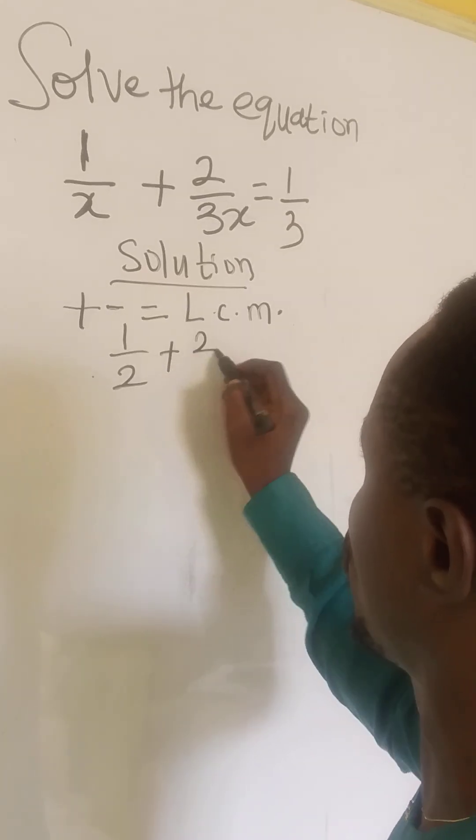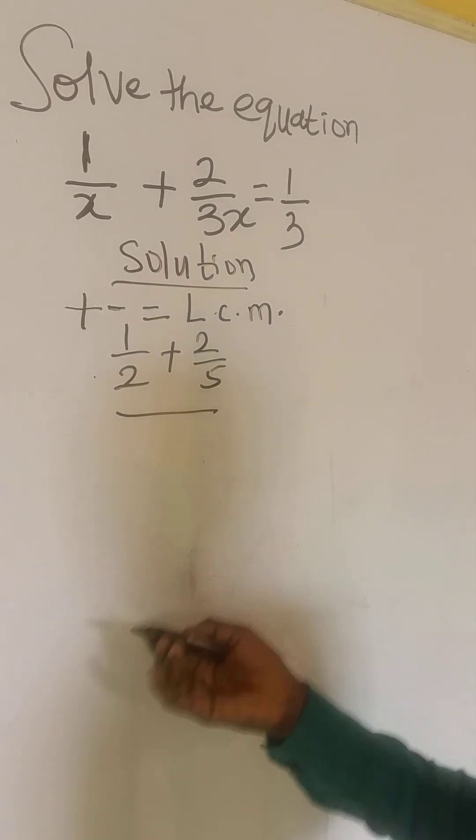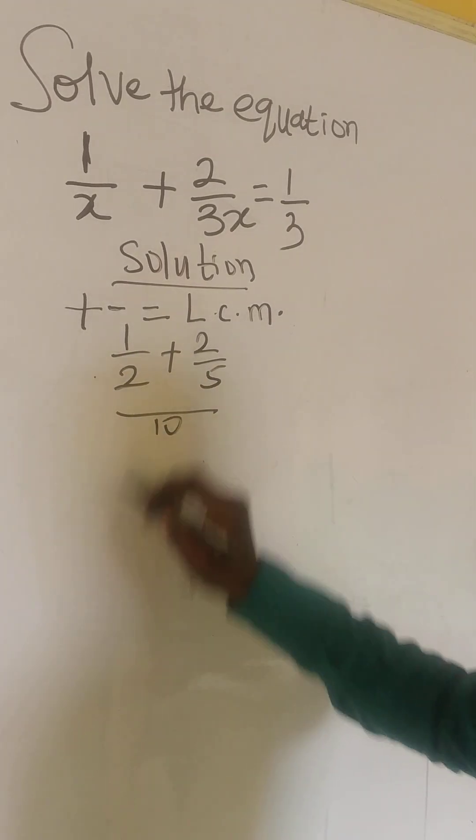You have 1 over 2 plus 2 over 5. They are separated by plus or minus. What you do is to find their LCM. 2 times 5 will give us 10.